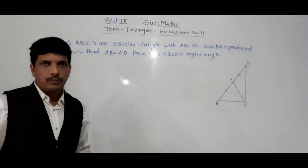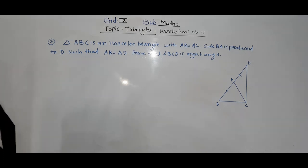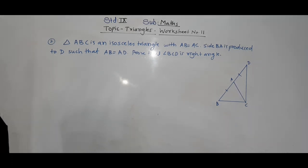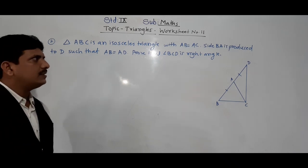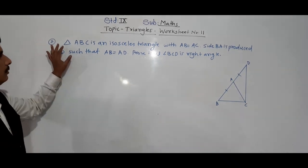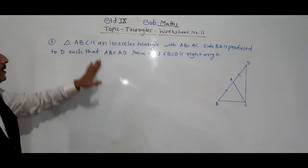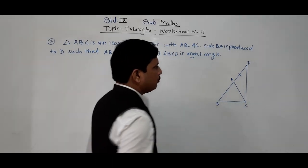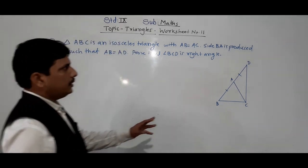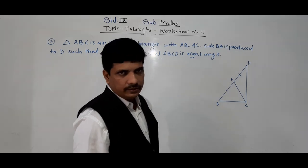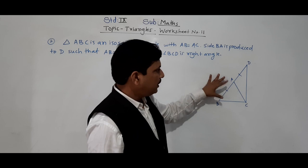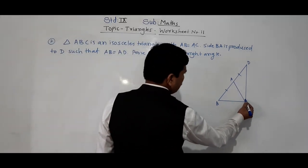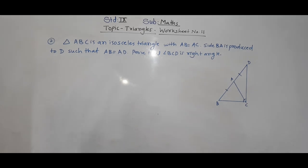The second problem from the worksheet: triangle ABC is an isosceles triangle with AB equal to AC. Side PA is produced to D such that BA equals AD. We have to prove that angle BCD is a right angle, i.e., 90 degrees.